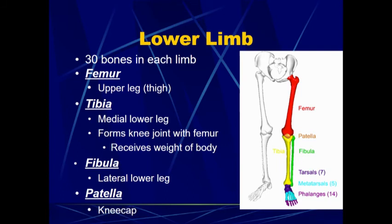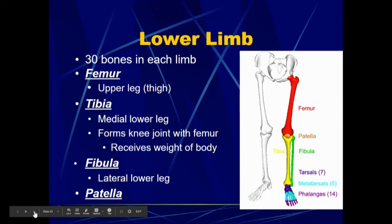Infants and young children up to about age two do not have a bony patella. It starts as cartilage, and then by the age of two it has ossified to an actual bony kneecap or patella.